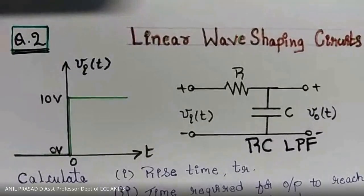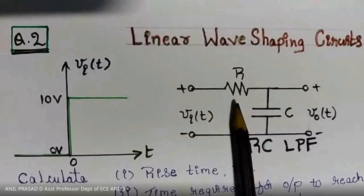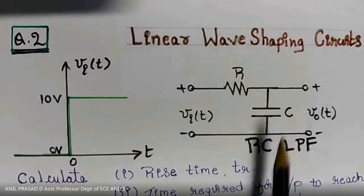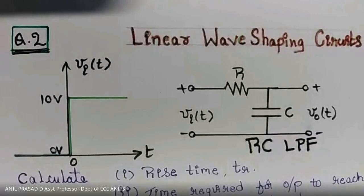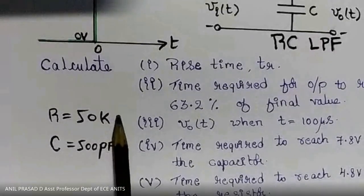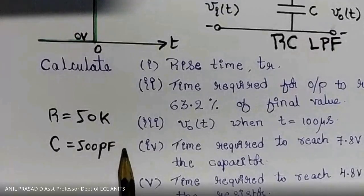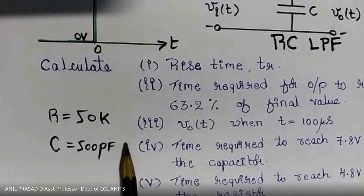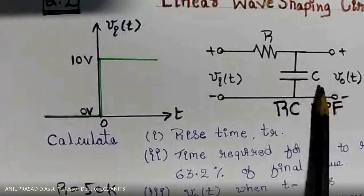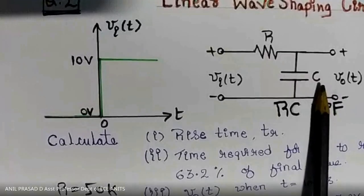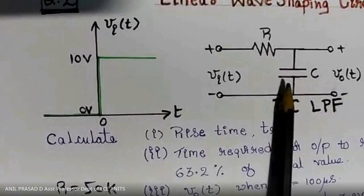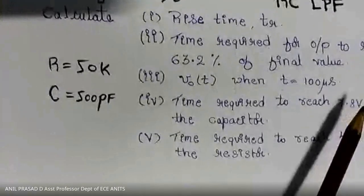Question five is the time required to reach 4.8 volts across the resistor. The circuit has both a resistor and a capacitor, so we need to find how much time is required for the resistor voltage to be 4.8 volts. Given values are R equal to 50 kilo-ohms and C equal to 500 pico-farads, with a step input of 10 volts.